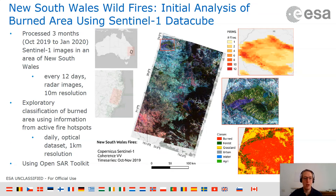I'm looking at the wildfires in Australia at the end of last year and beginning of this year — in particular, in New South Wales, between Sydney and Brisbane. I've processed three months' worth of Sentinel-1 data, so one image every 12 days: radar images at about 10-meter resolution.